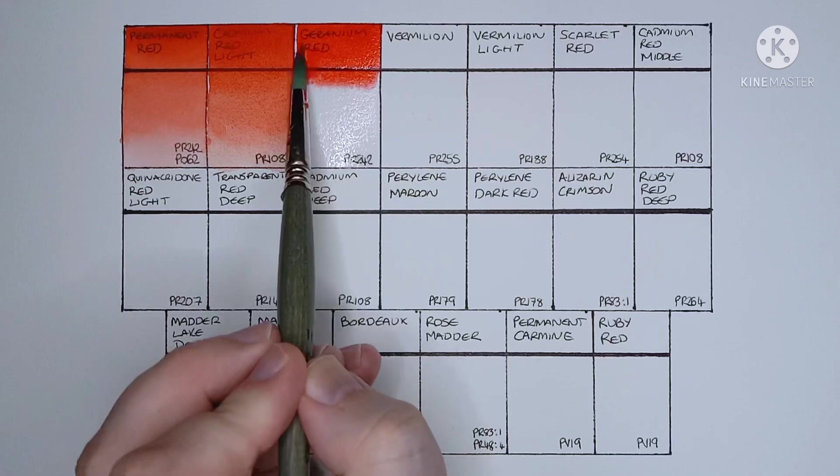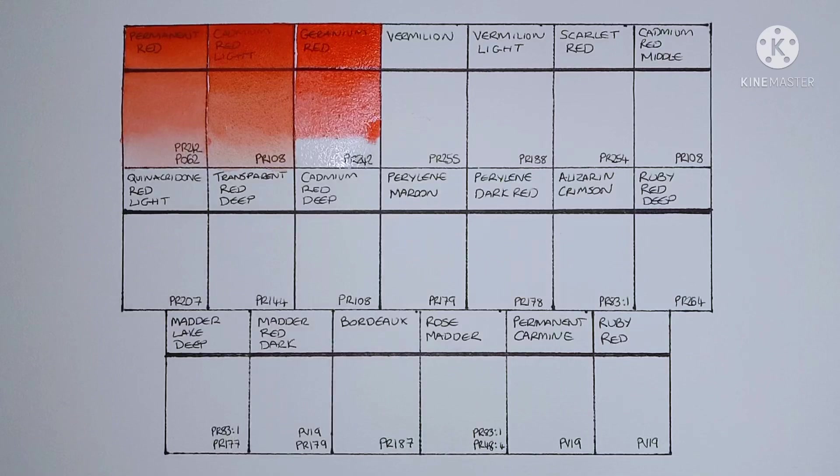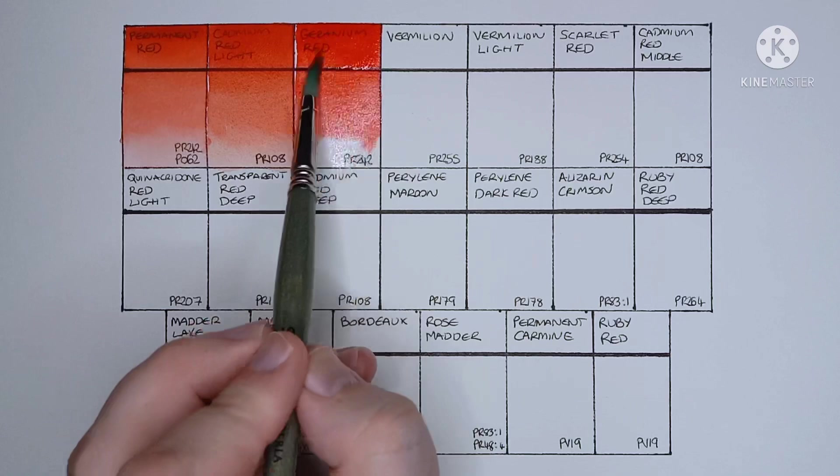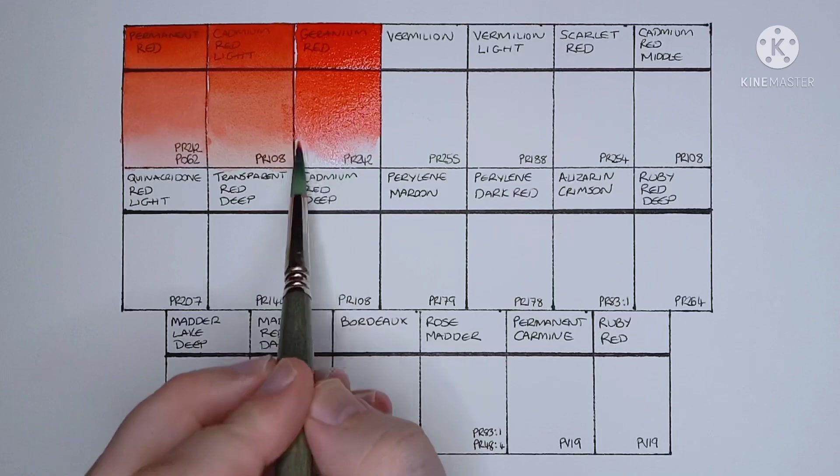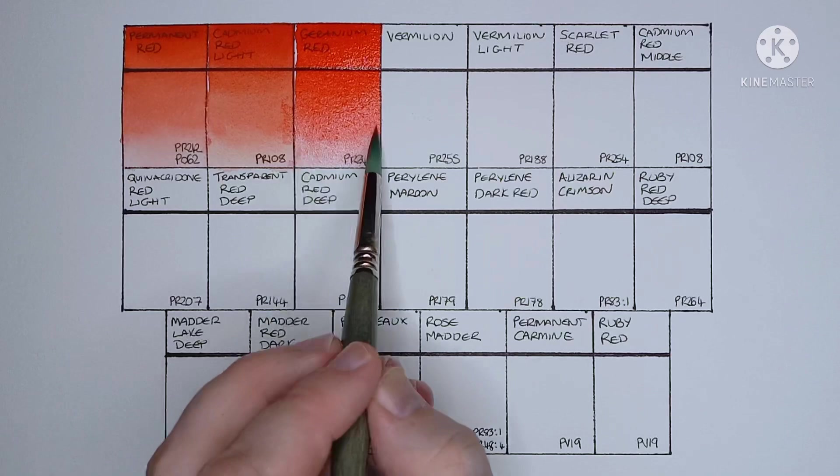Next we have geranium red, and this one is made from PR242. Yeah, this one is really vibrant, I like this. I'm quite impressed with a few of the PR242s I've tried recently. It's not a pigment I use very often.